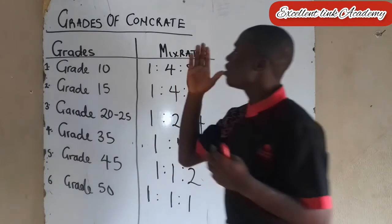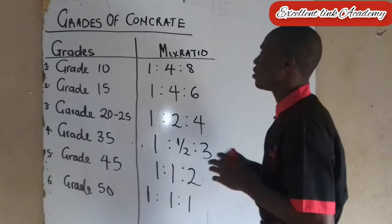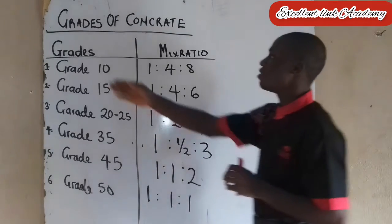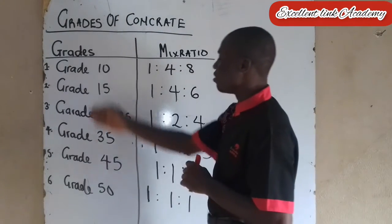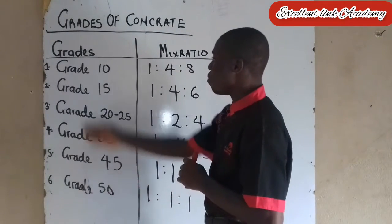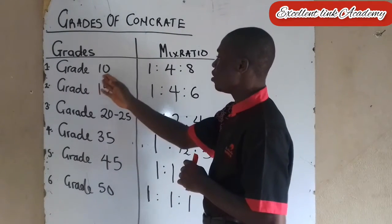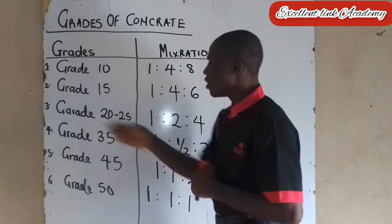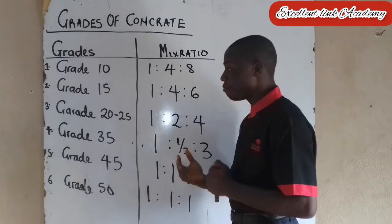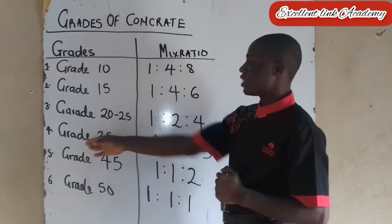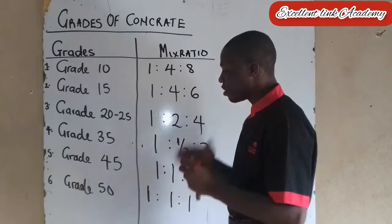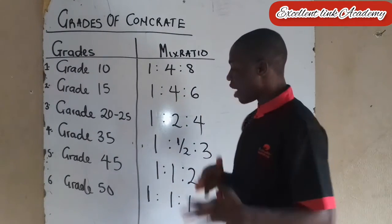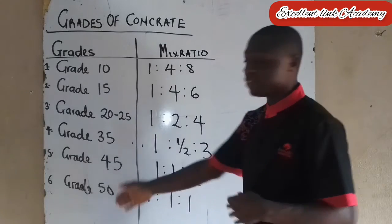We have the grades of concrete. These are the grades: we have grade 10, grade 15, grade 20 to 25, grade 35, grade 45, and lastly grade 50.